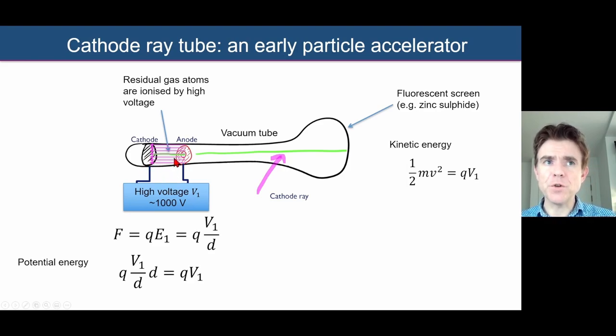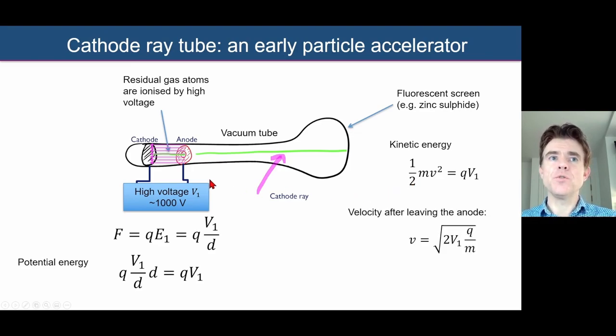And so all of that potential energy is converted to kinetic energy by the time it reaches the anode. So we take that potential energy QV1 and equate it to the kinetic energy. And that will say that the velocity of these charged particles, when they reach the anode, and you'll notice there's a small hole there for the charged particles to escape from the anode, the velocity of those particles at that point is just given by rearranging this equality between kinetic energy and potential energy. So just by solving this for V, we can see that V is just 2V1 multiplied by Q divided by M, and square root of that will give us V.